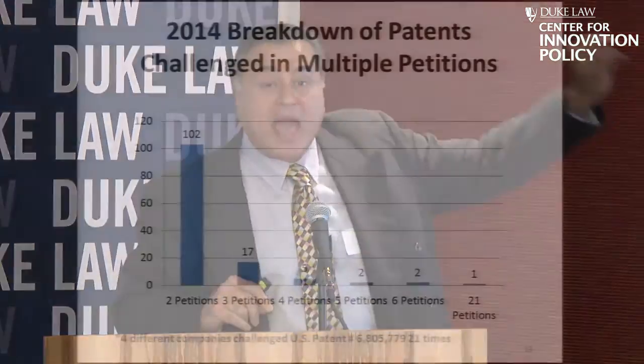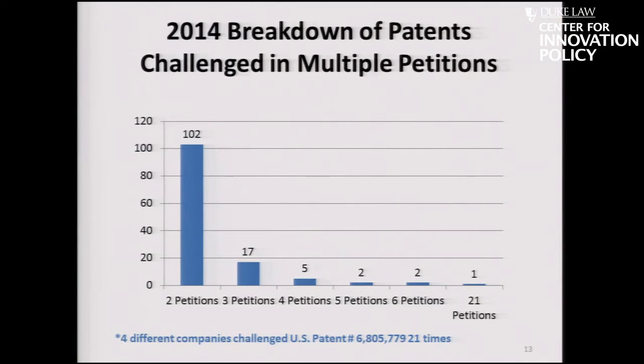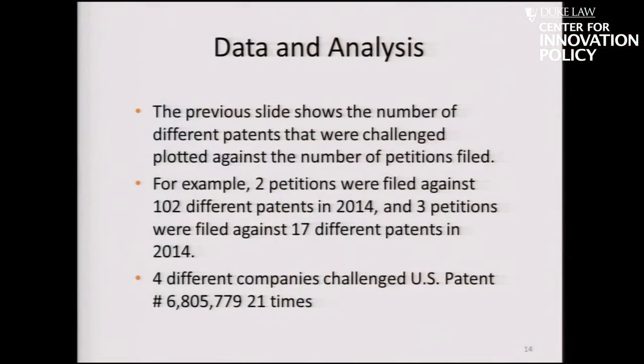Looking at the number of patents and the number of petitions: more than 100 patents had two petitions, a sizable number had three, and the highest is one patent with 21 petitions filed against it — a tremendous amount of multiple petitions. Different claims and different grounds should be legitimate. But one thing we noticed is that if 10 claims are brought in a lawsuit, you often find two or three IPRs — perhaps because of page limitations — with three or four claims challenged in each IPR. So there's a fair amount of interesting strategic behavior. I'll turn it over to Artie for the case studies.